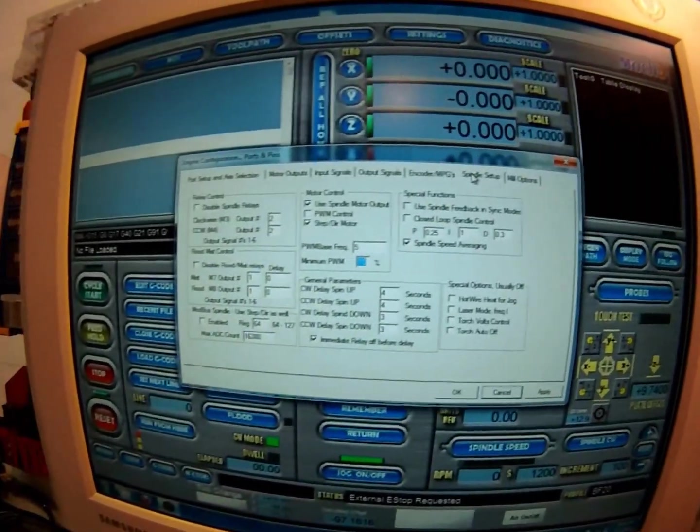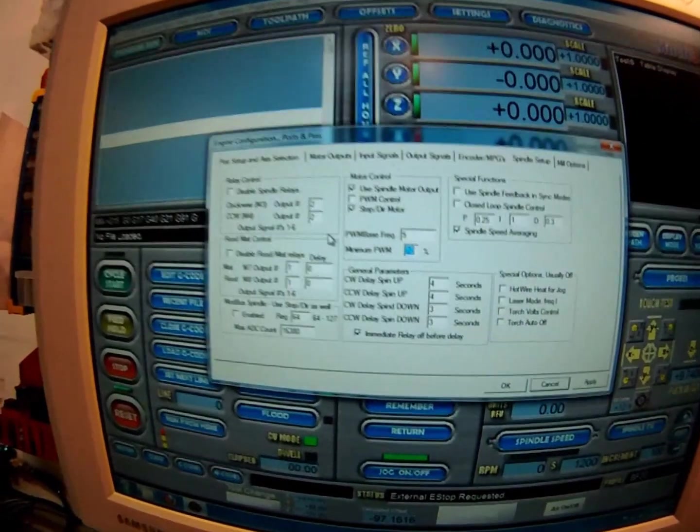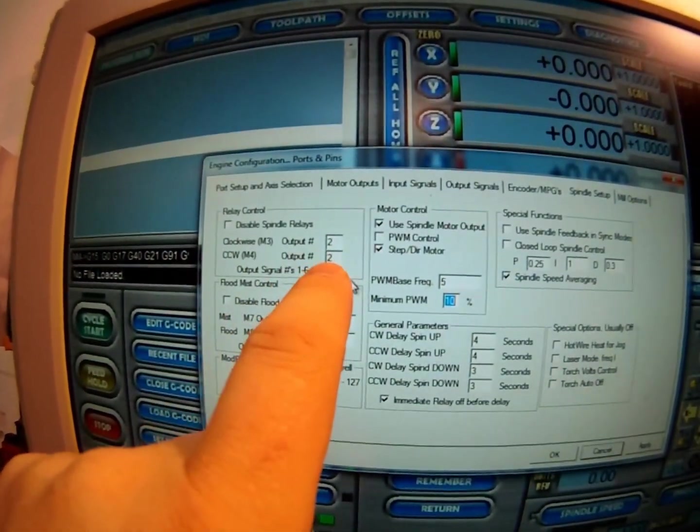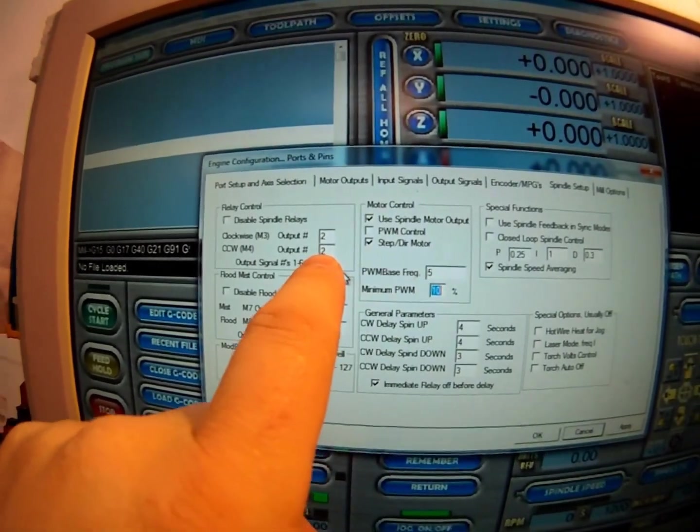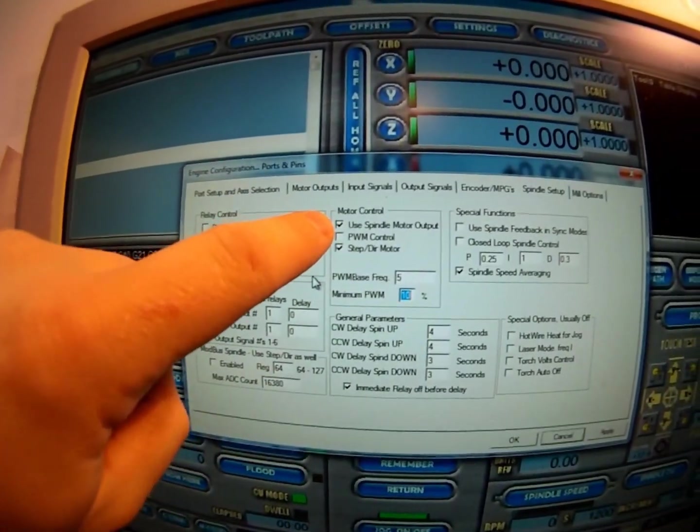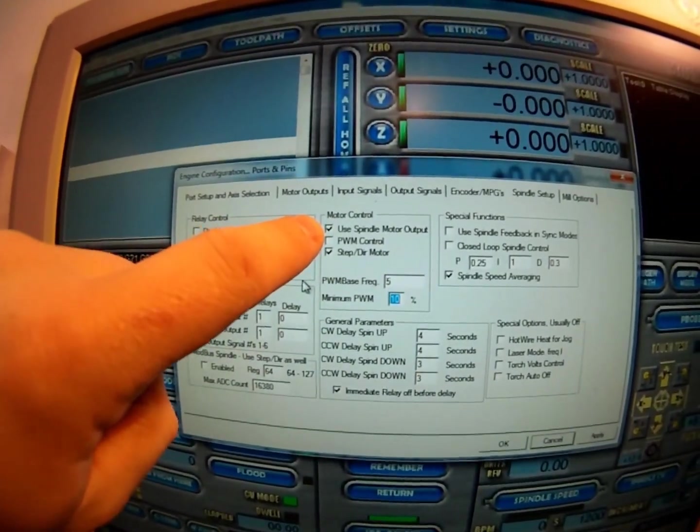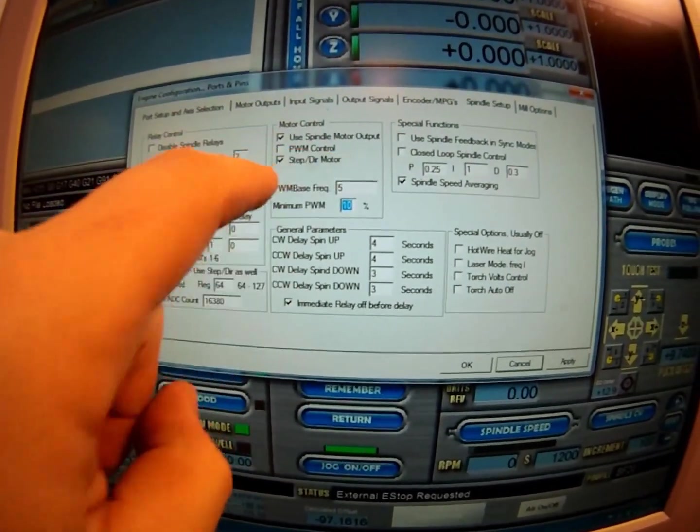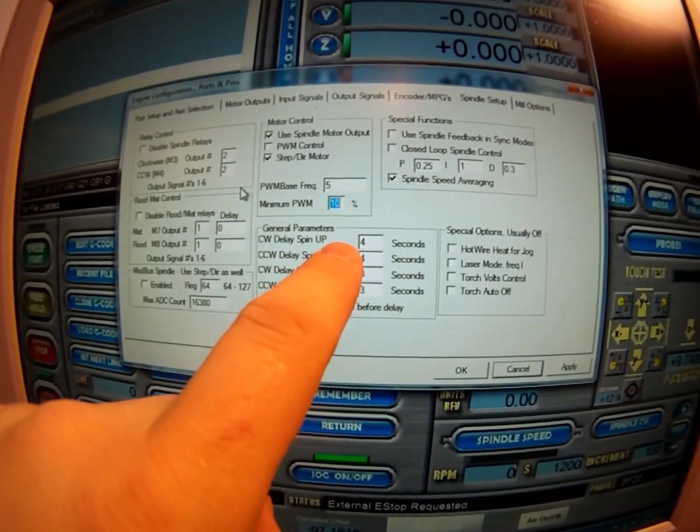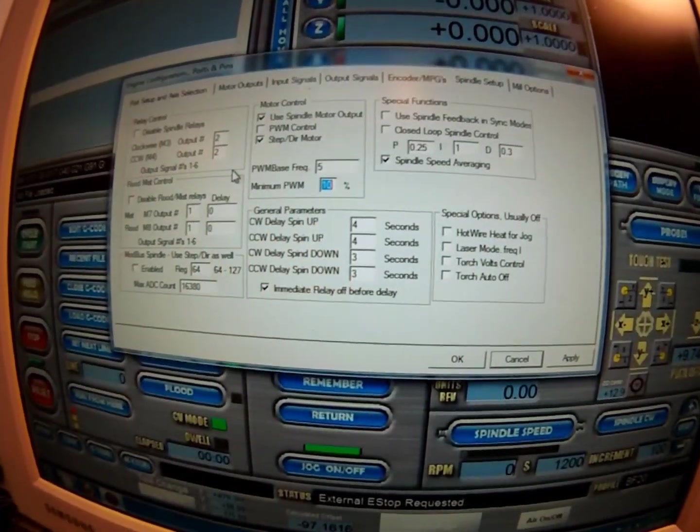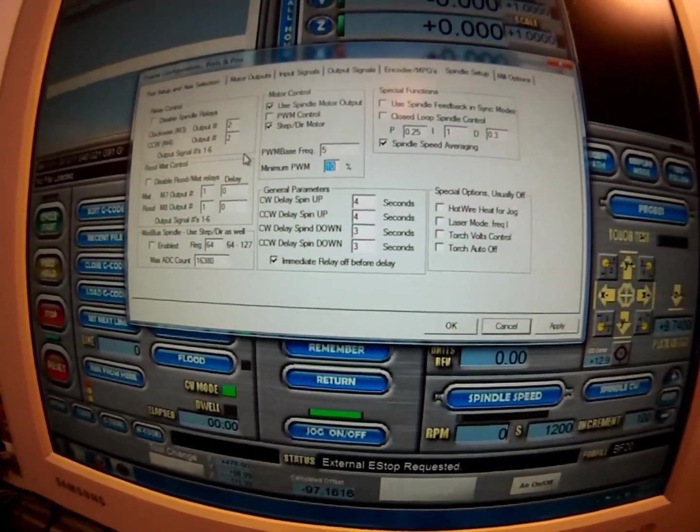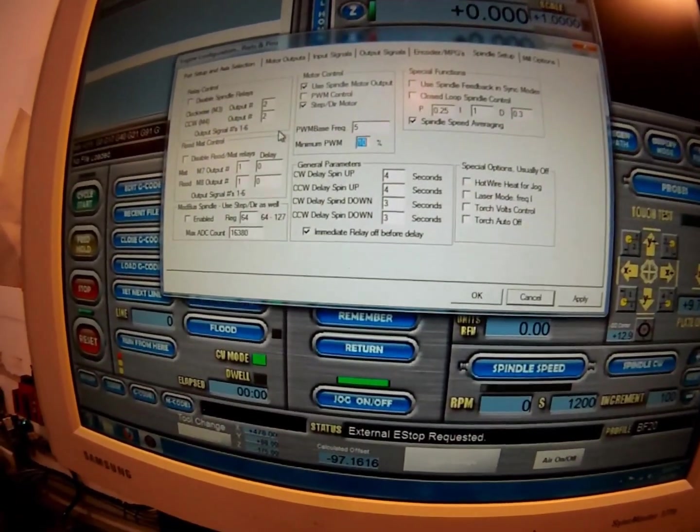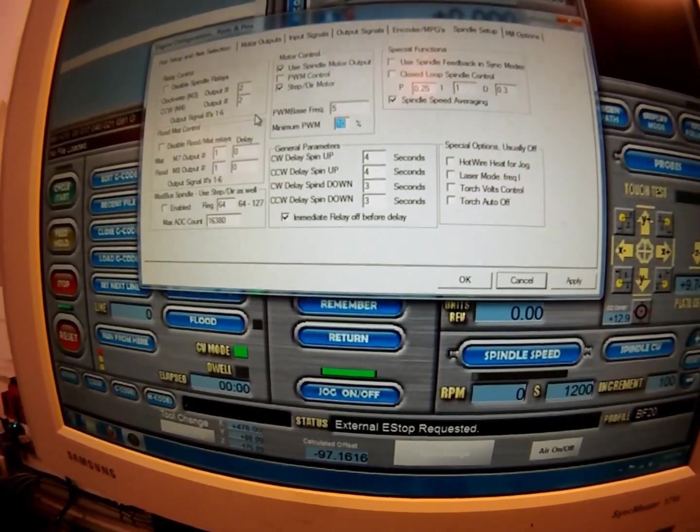So now we're going to go to Spindle Setup. Now I have M3 and M4 set up for output number two. As per the manual, I have used Spindle Motor Output step and direction. Pulse width doesn't matter because we're not doing pulse width. I put my spin-up and spin-down to 4 seconds and 3 seconds respectively, and I put the relay to immediate.